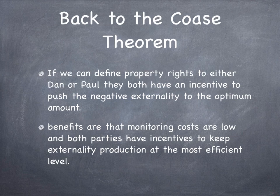Now lastly, the Coase Theorem. Let's return to the previous example with Dan and Paul. If we define property rights in favor of Dan, Paul then has an incentive to negotiate with Dan to reduce the amount of noise created. Paul can pay Dan a transaction cost, and both parties are better off, including everyone else.